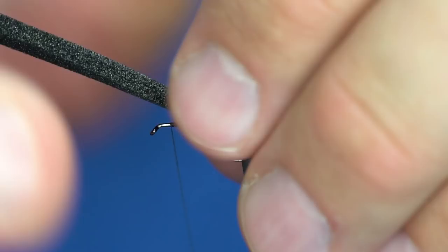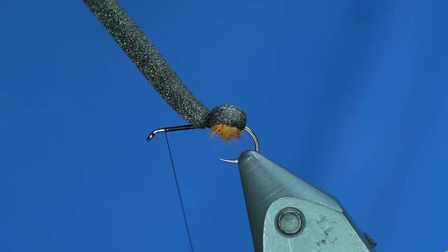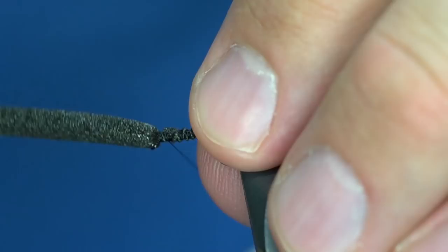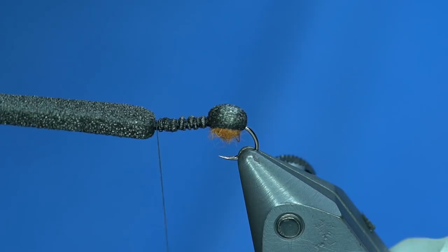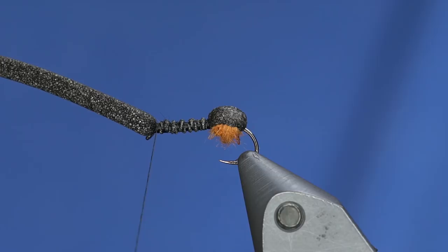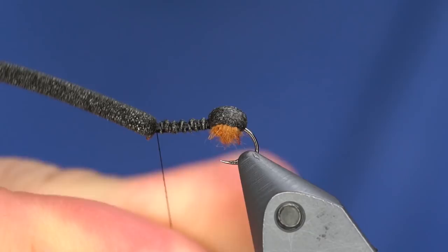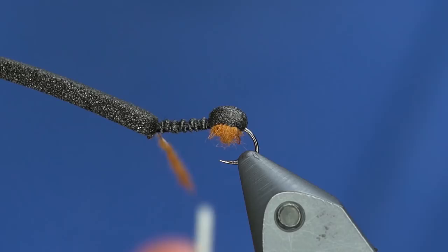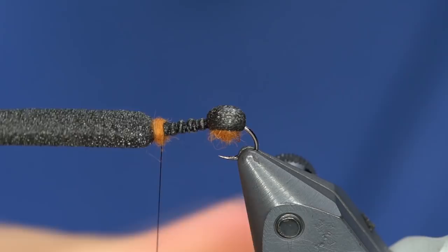So here we are, ball of dubbing, foam over the back. This time when I pull it forward I'm not going to stretch it too much but I'm going to advance my thread to about right here and I'm going to stretch my foam just a little bit. So I've got the foam bound down as you can see all the way up to the eye of the hook.